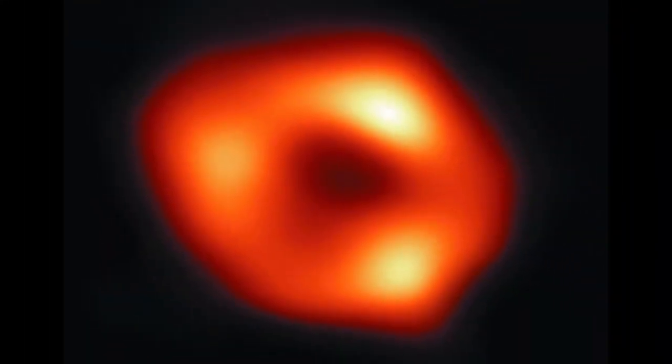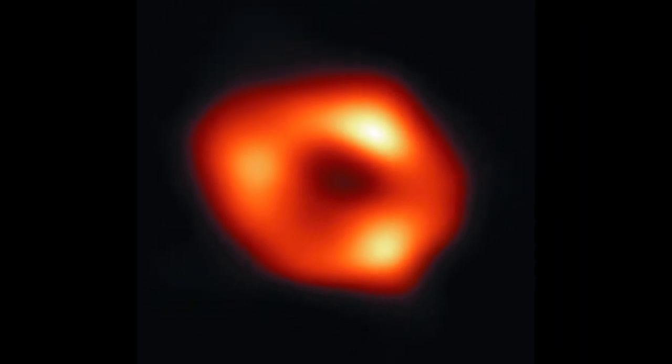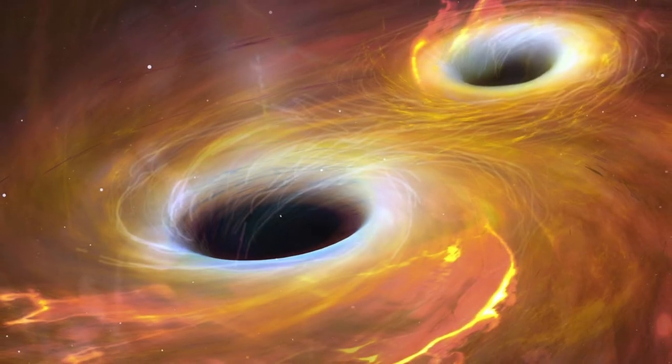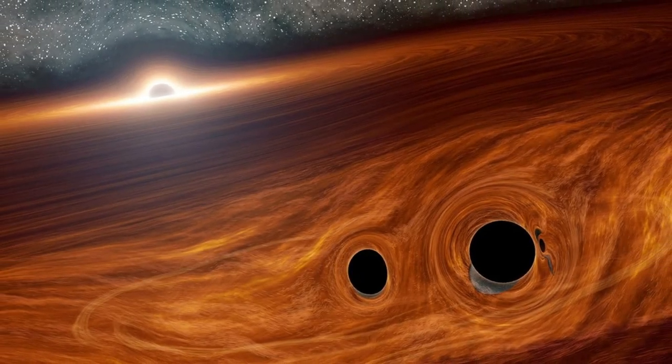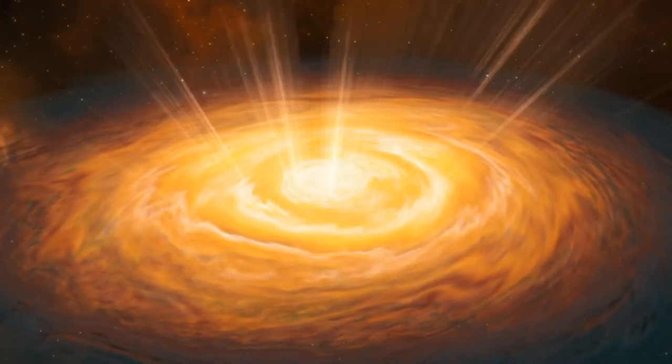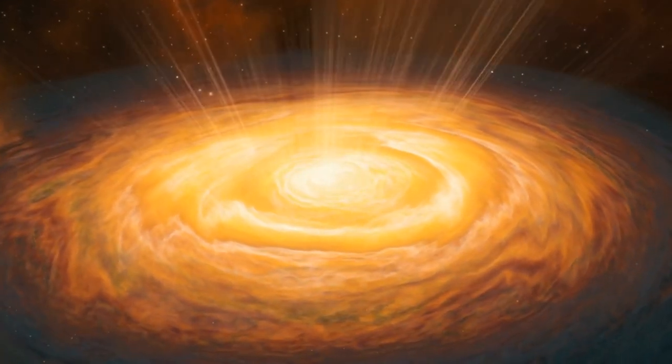First, the picture is an amazing proof of Einstein's theory of general relativity. The EHT has now taken pictures of two black holes with masses that are more than a thousand times different from each other. Even though the masses are very different, the measured size and shape match what the theory says they should be.